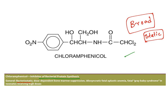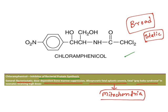Bacteriostatic, but it has problems: it will show dose-dependent bone marrow suppression, idiosyncratic fatal aplastic anemia, and gray baby syndrome in neonates. The reason for all this is chloramphenicol inhibits not only bacterial protein synthesis but also mitochondrial protein synthesis. Human cells contain mitochondria which has its own protein synthesis machinery, and that is inhibited by chloramphenicol, causing all these adverse effects.